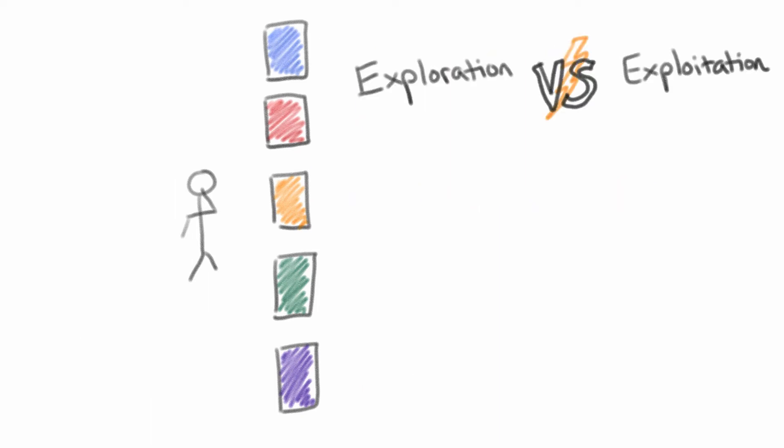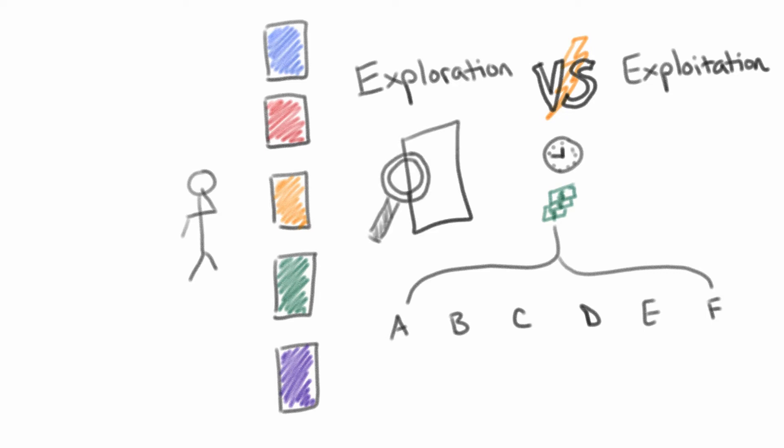It is a prime example of the exploration exploitation dilemma where a limited resource such as time or funding must be allocated toward different choices in a strategy that needs to continually balance gathering information about the choices, exploration, and using that information to maximize rewards, exploitation, by committing to the choice that is believed to be the best. More exploration leads to more accurate exploitation, but with the expense of the opportunity cost for deeper exploitation.